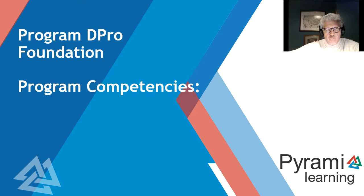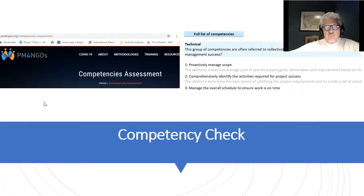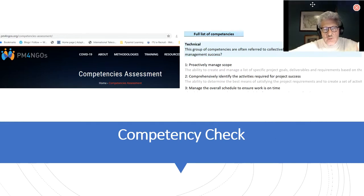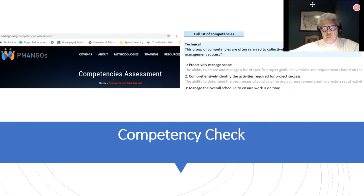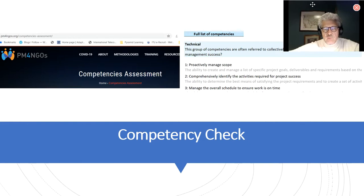First of all, before we start, I really want to highlight a very helpful and useful tool. PM for NGOs has a competency assessment — or a competency check, if you like. It's on the website and you can see the URL on the screen. You can download it. It's simple — it's in Excel.